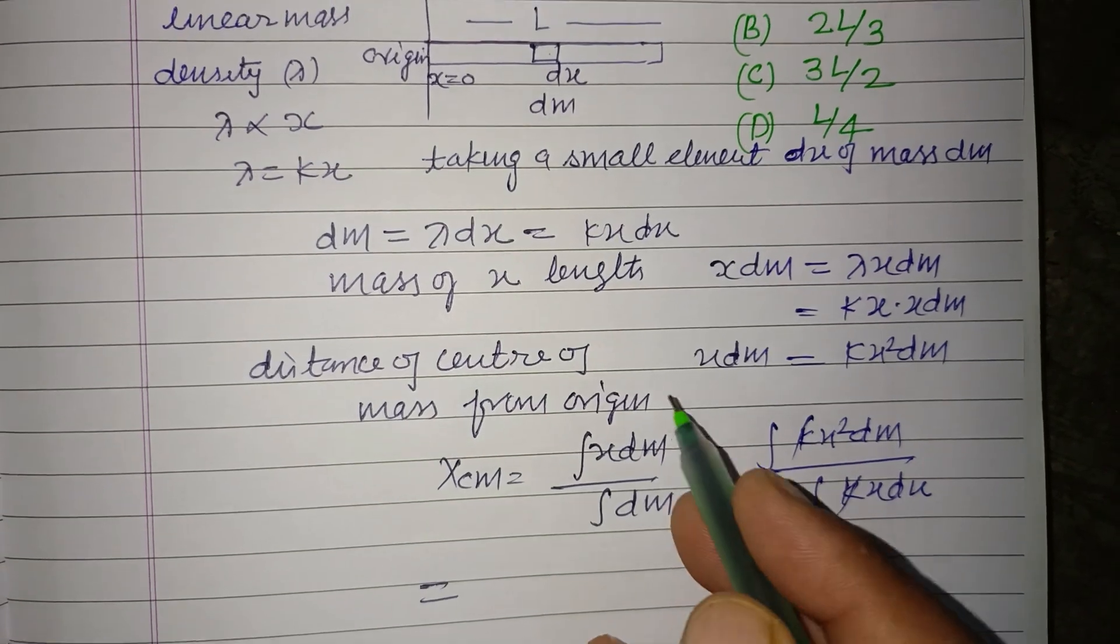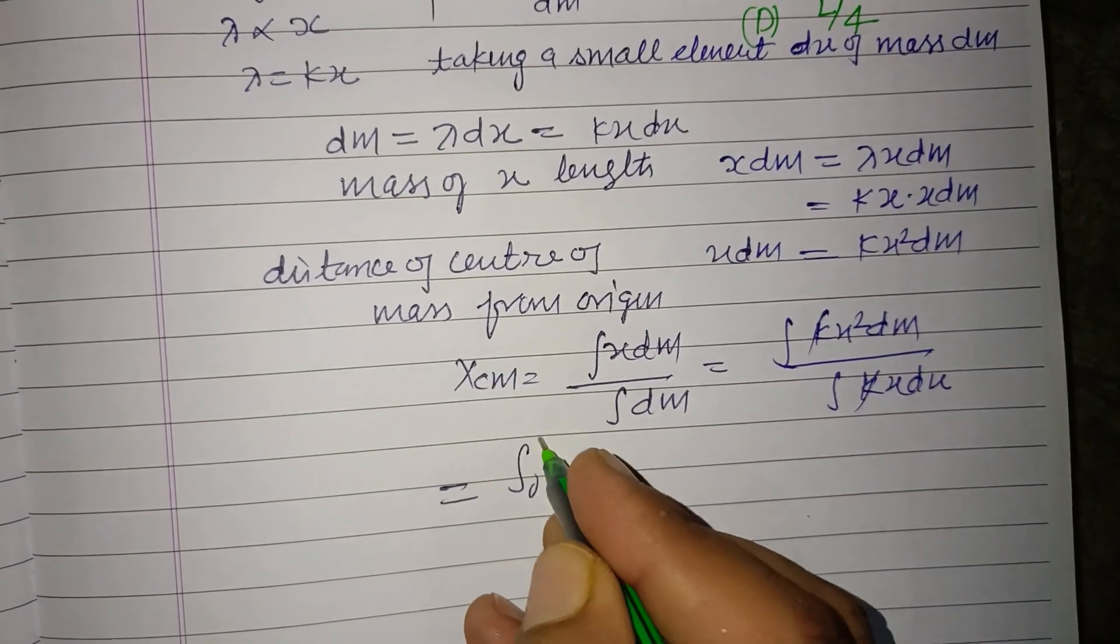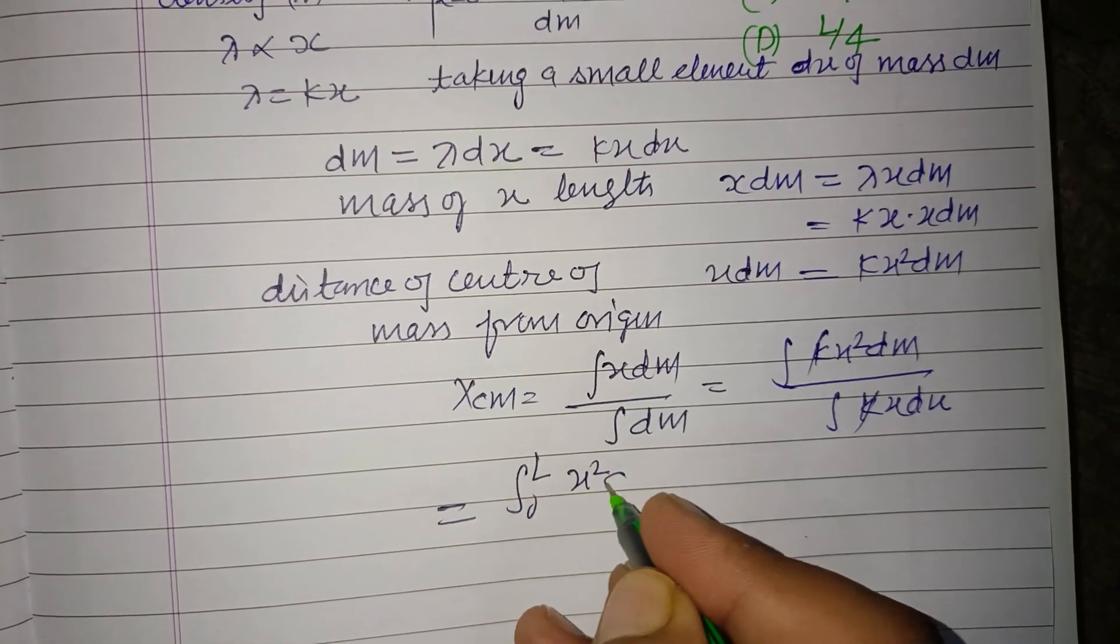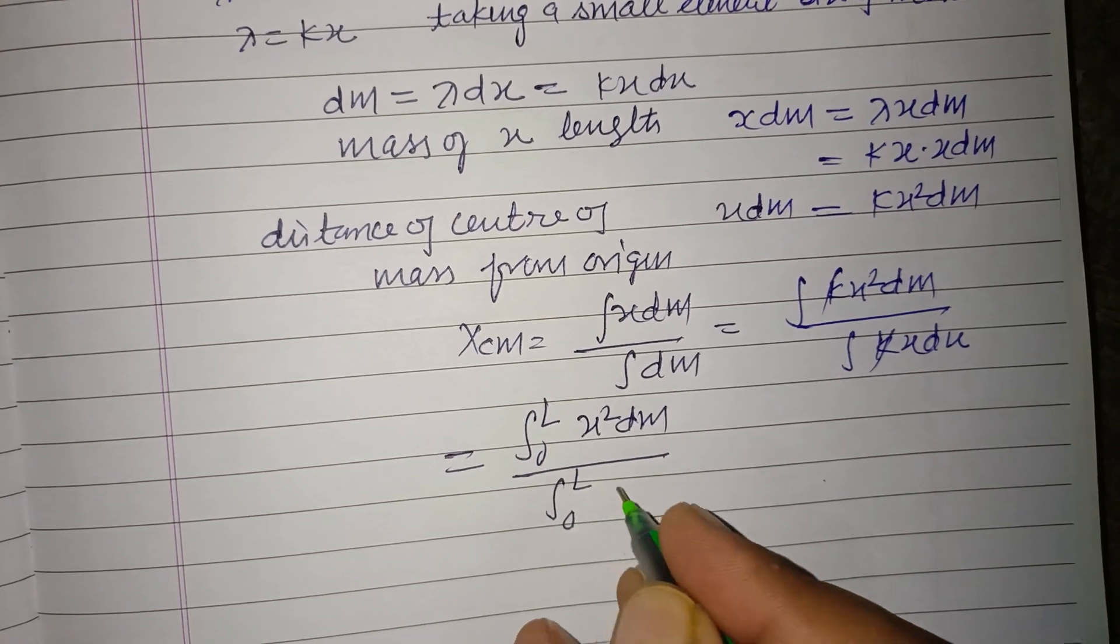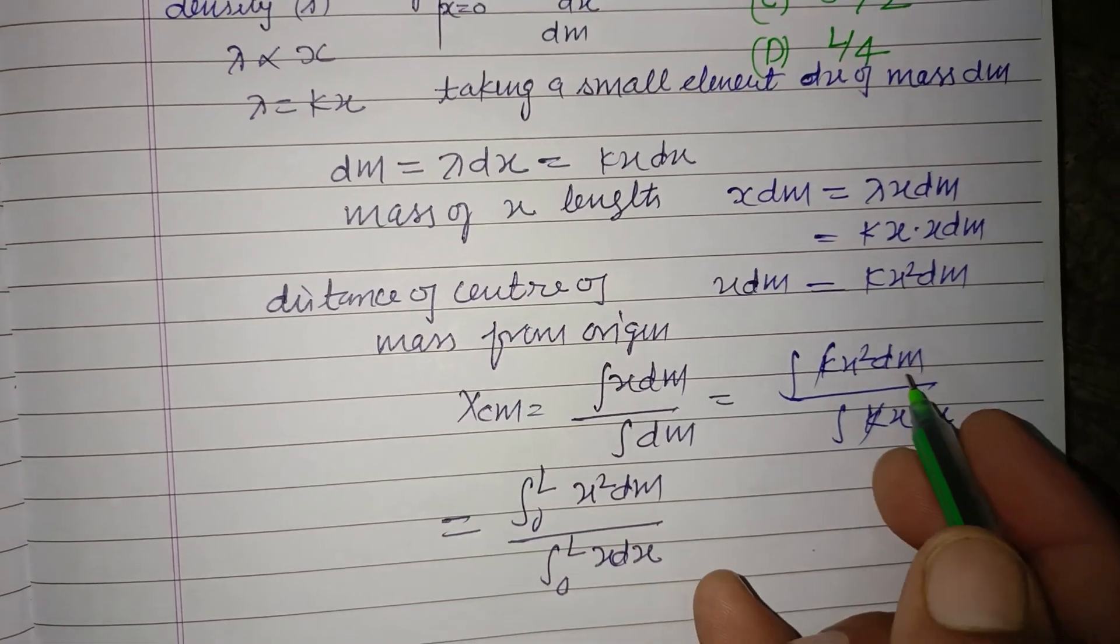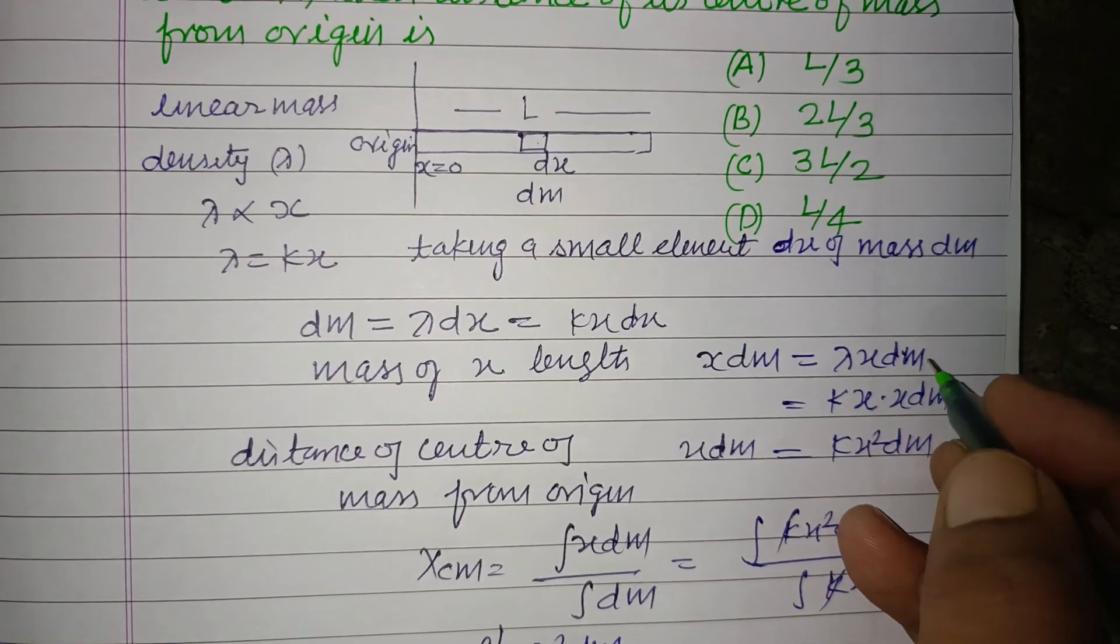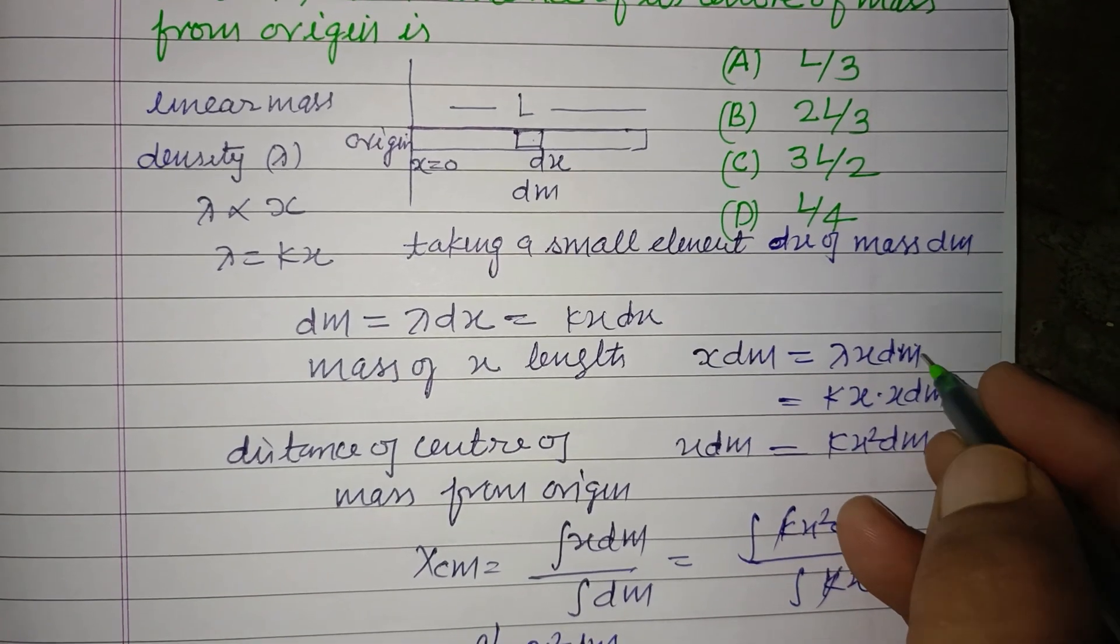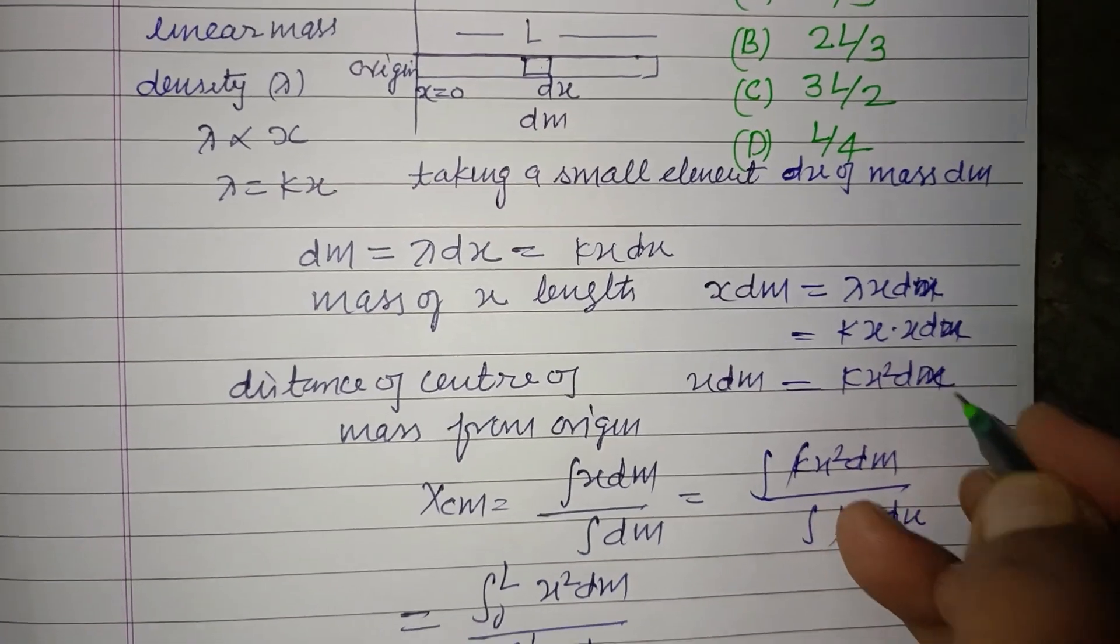Integrating this from 0 to L. So 0 to L, x squared dx over integration 0 to L, xdx.